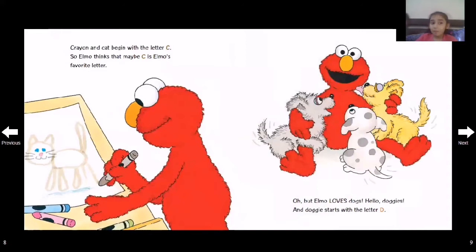Crayon and cat begin with C, so Elmo thinks that maybe C is Elmo's favorite letter. But Elmo loves dogs. Hello doggies! And doggie starts with the letter D.